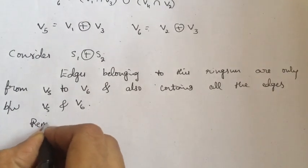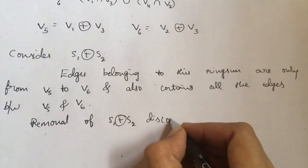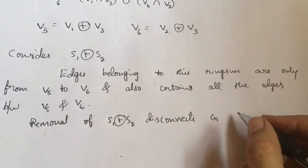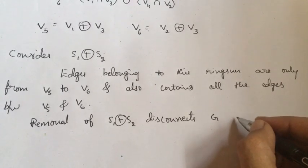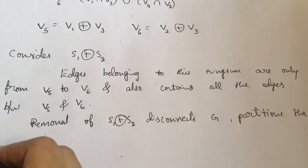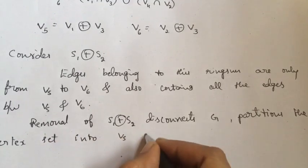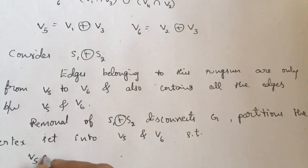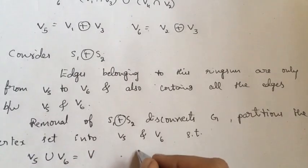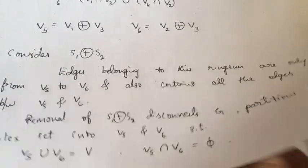Thus, removal of S1 ringsum S2 disconnects G and partitions the vertex set into V5 and V6 such that V5 union V6 is the vertex set V and V5 intersection V6 is empty. Hence, S1 ringsum S2 is again a cut set or an edge disjoint union of cut sets. I will give you one small example.